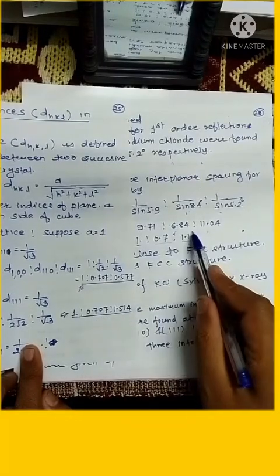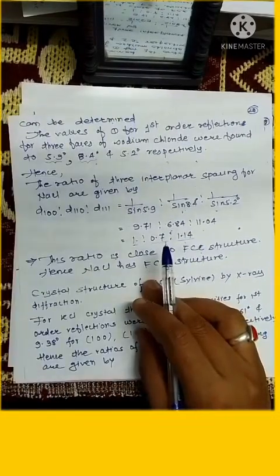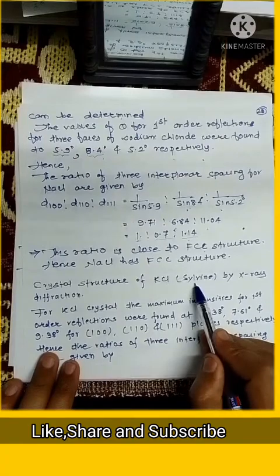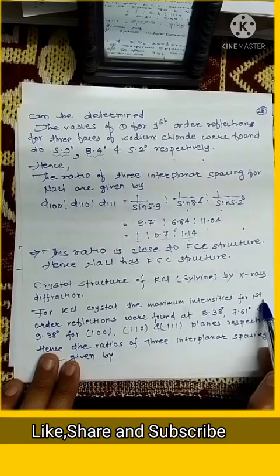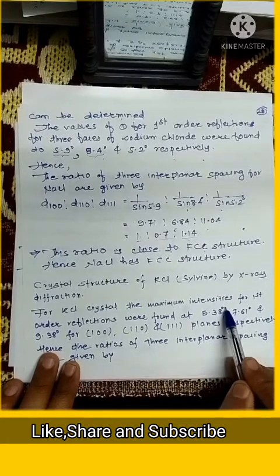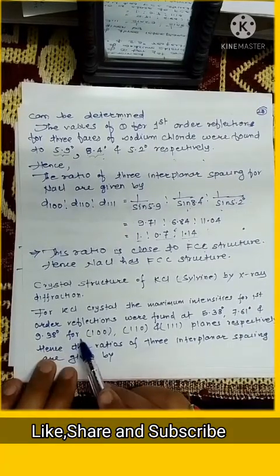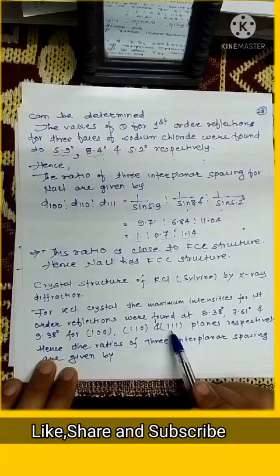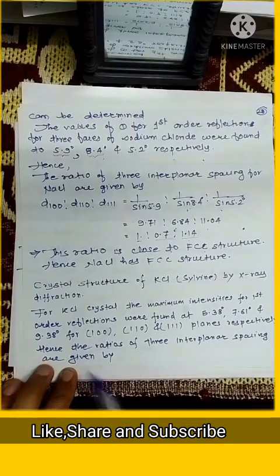Now we are going to see crystal structure of KCl, that is sylvine, by X-ray diffraction. For KCl crystal, the maximum intensity of first order diffraction were found at 5.38 degree, 7.61 degree and 9.38 degree for 100, 110 and 111 planes respectively. Hence the ratio of three interplanar spacings are given by d₁₀₀ : d₁₁₀ : d₁₁₁.